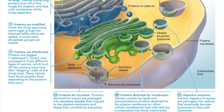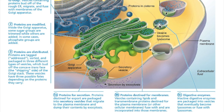Another organelle shown here is the lysosome. The prefix 'lyso' means to break something apart. Lysosomes are small spherical organelles surrounded by a membrane that contain digestive enzymes. They can break down structures within the cell that are old, worn out, or dying. It's sort of like a little stomach inside your cell — it contains acids and enzymes specifically meant to break things down.